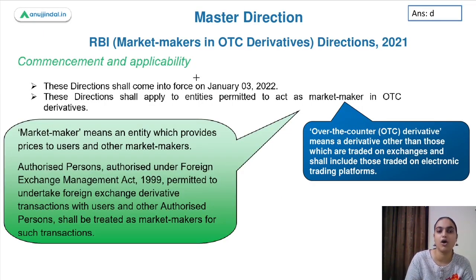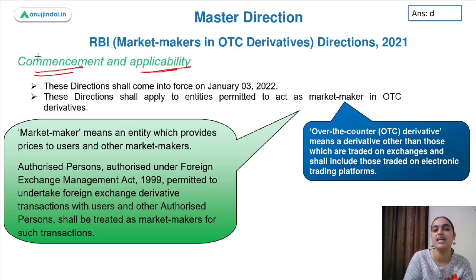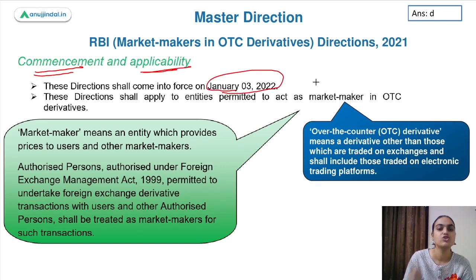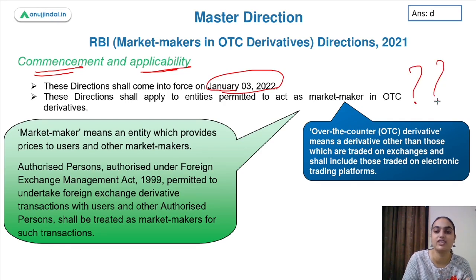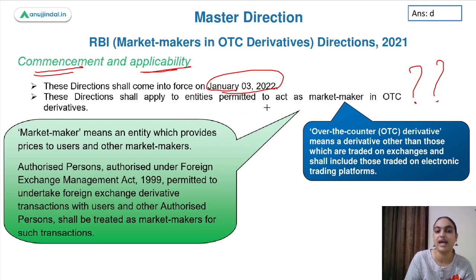First, talking about commencement and applicability. As the question mentions, these directions will come into force from January 3rd, 2022. Talking about applicability — which entities are these directions applicable to? They are applicable to entities that are permitted to act as market maker in OTC derivatives.